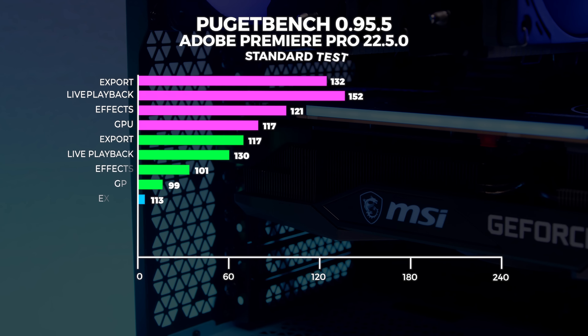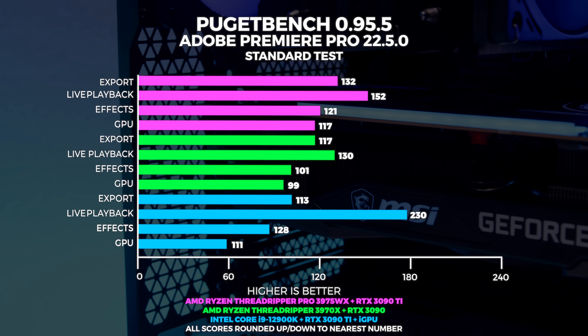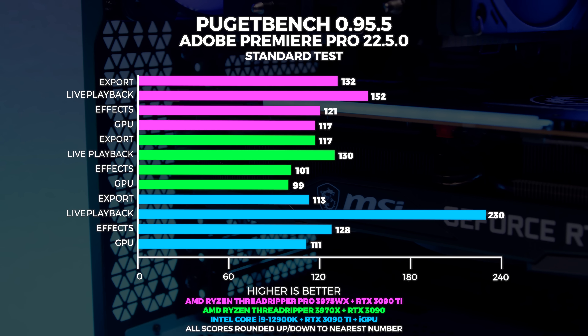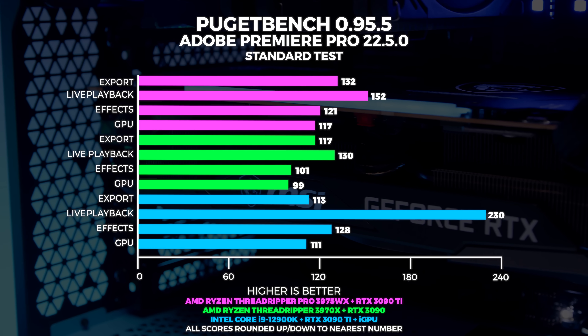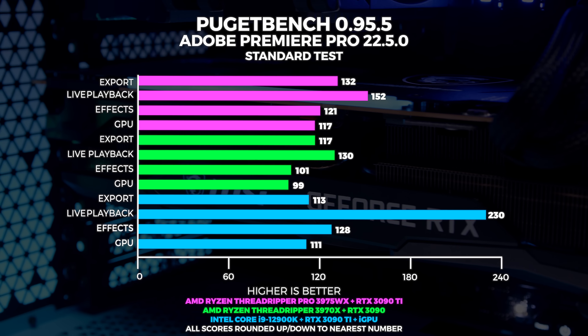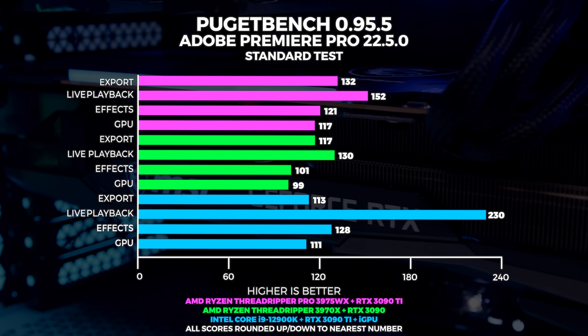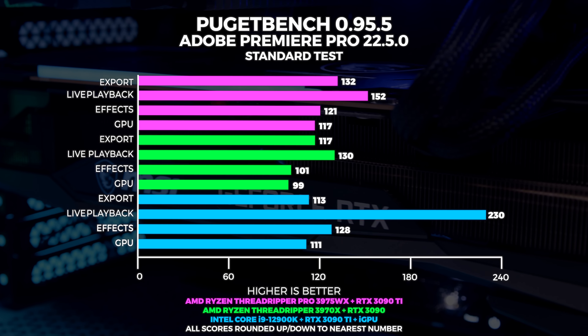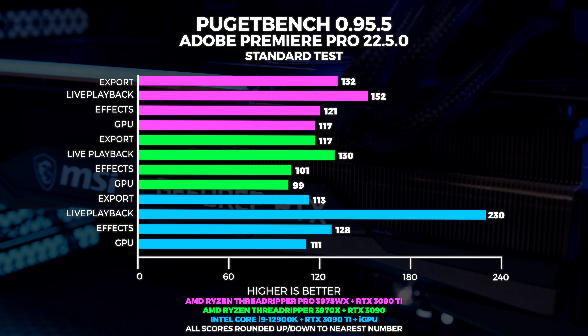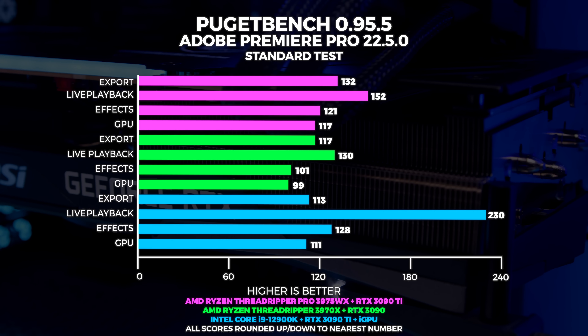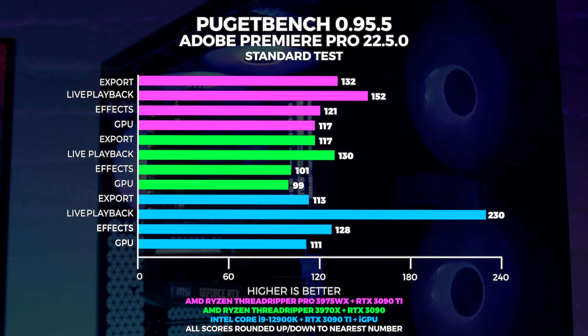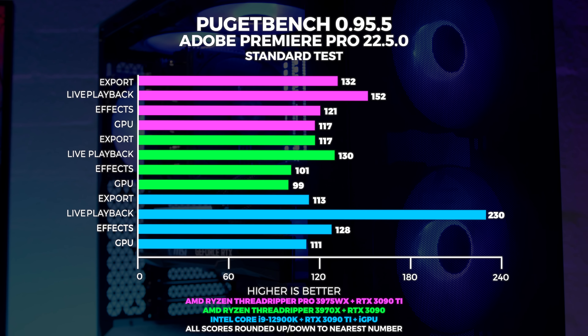I did notice that the 3090 Ti here makes these tasks notably faster than the 3090, which is actually pretty interesting. Now if we drill into the specifics per system, the only real metric where the 12900K with iGPU system is faster than the Threadripper Pro is in playback performance.